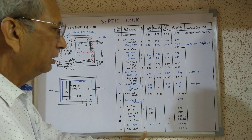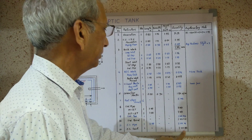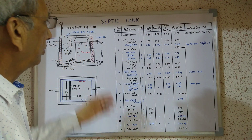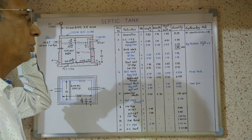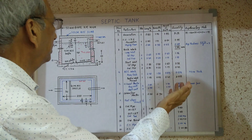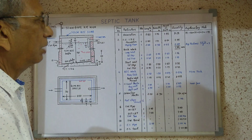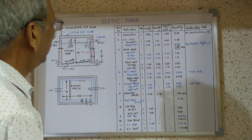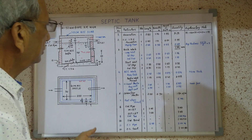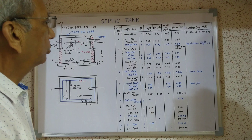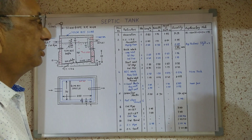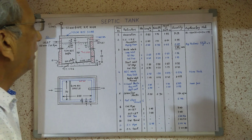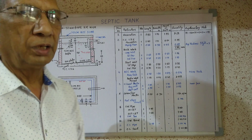These are all the quantities for a septic tank for 25 people. In the second chapter we will calculate the amount of these quantities by applying the rates. This is all about how to calculate the quantity of different items of a septic tank. Thank you very much.